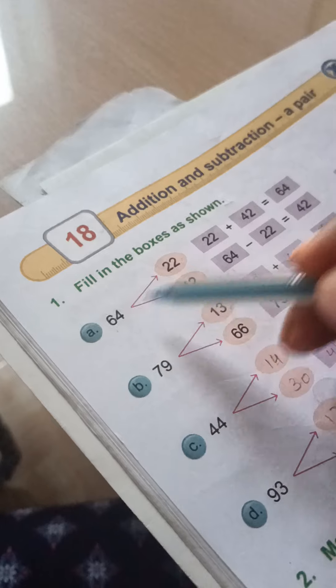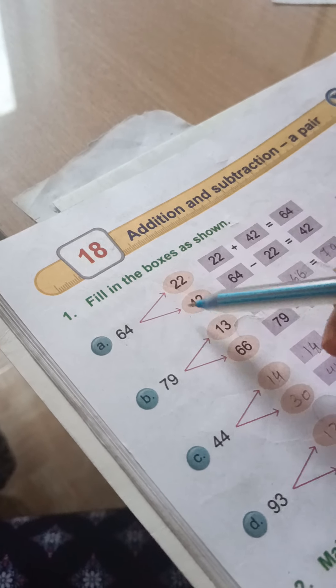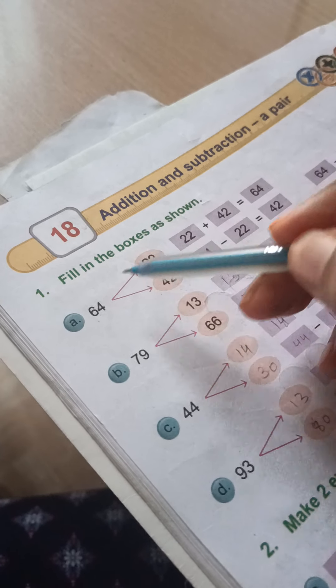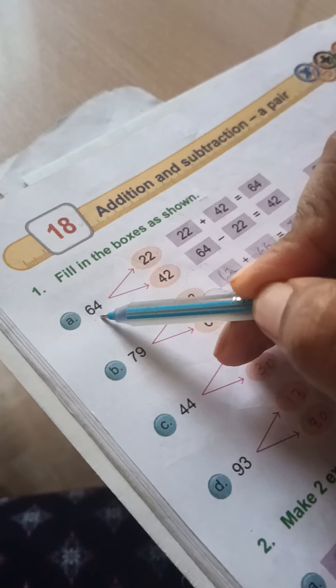First of all, we have given 64, this is 64. So we have given two numbers: this is 22 and 42. This means the two numbers that we have to add together for this answer. Okay?